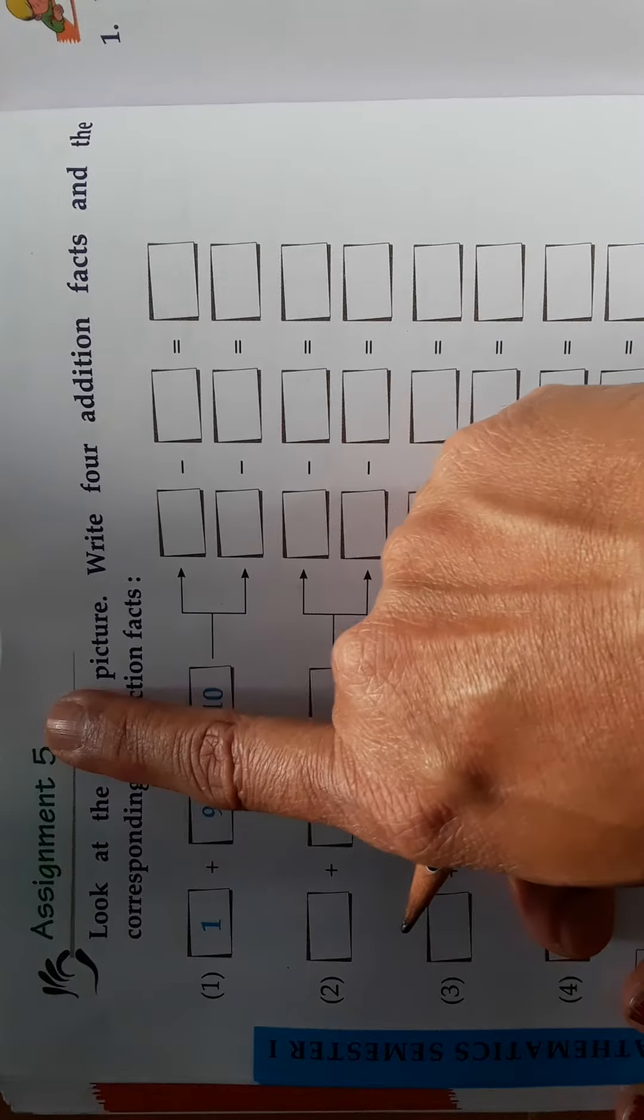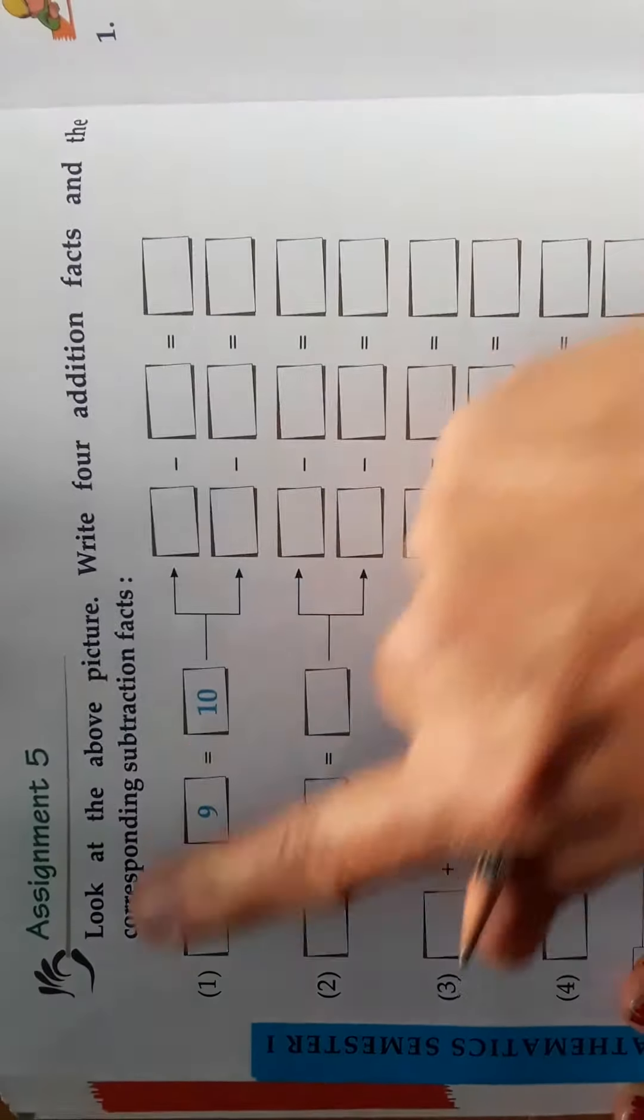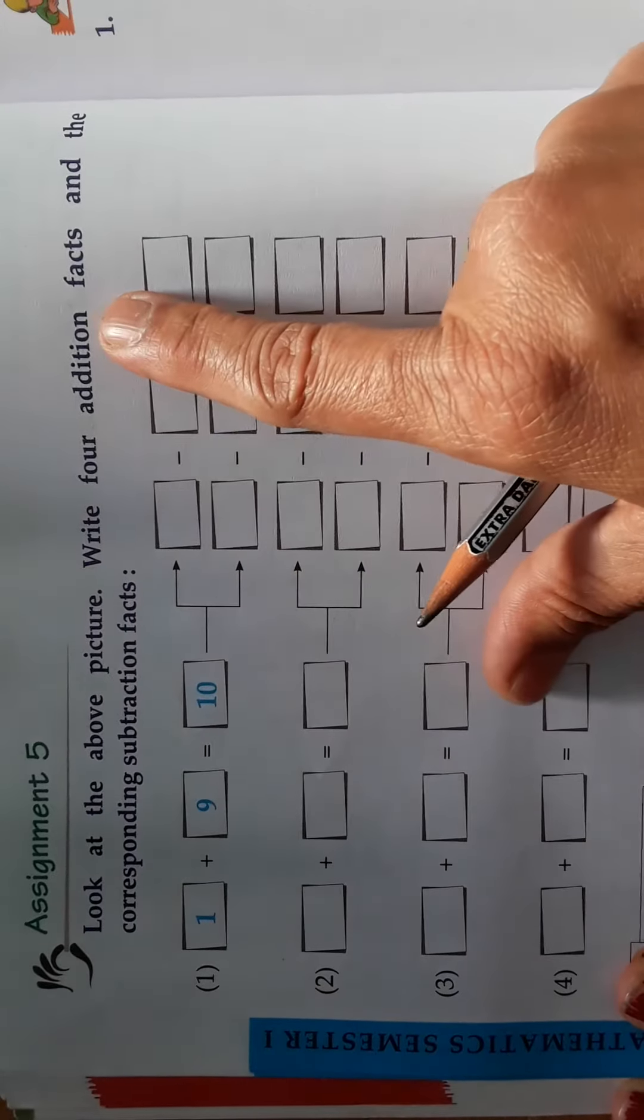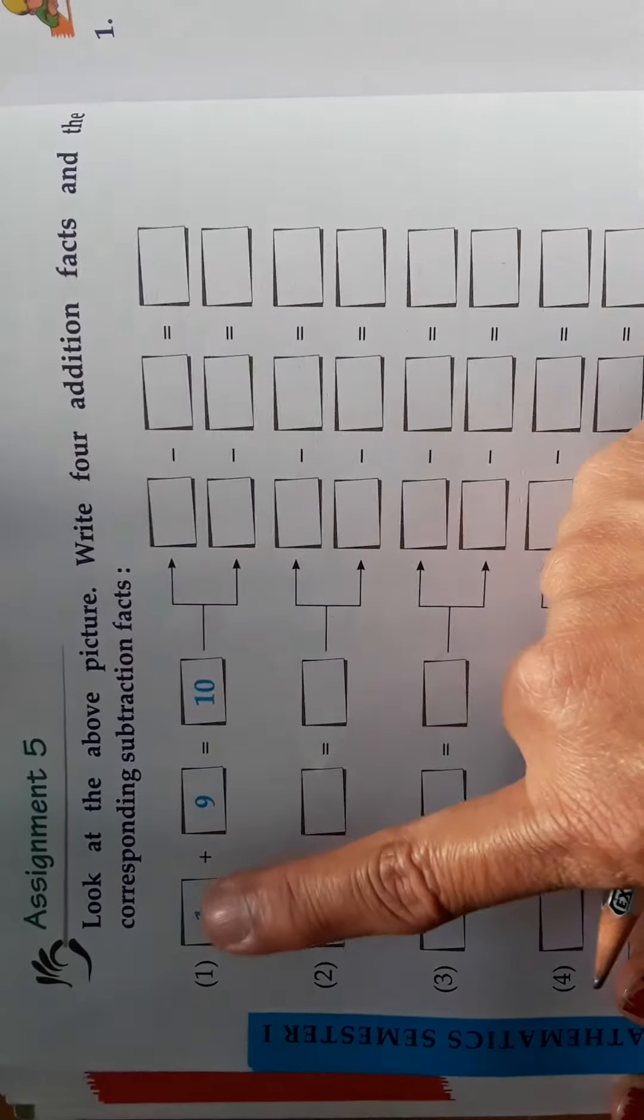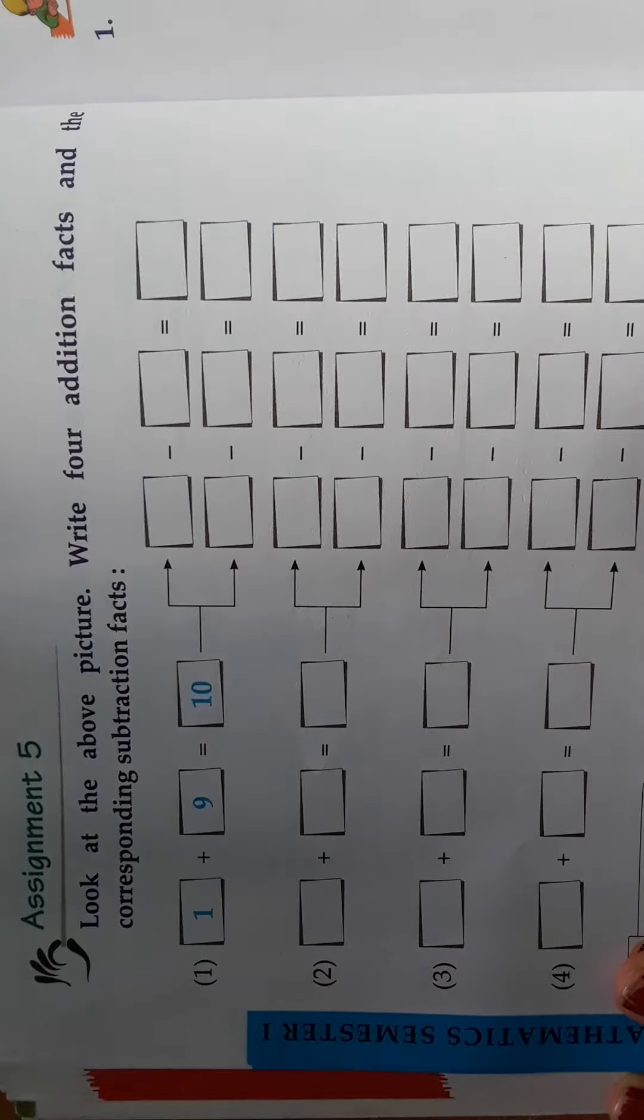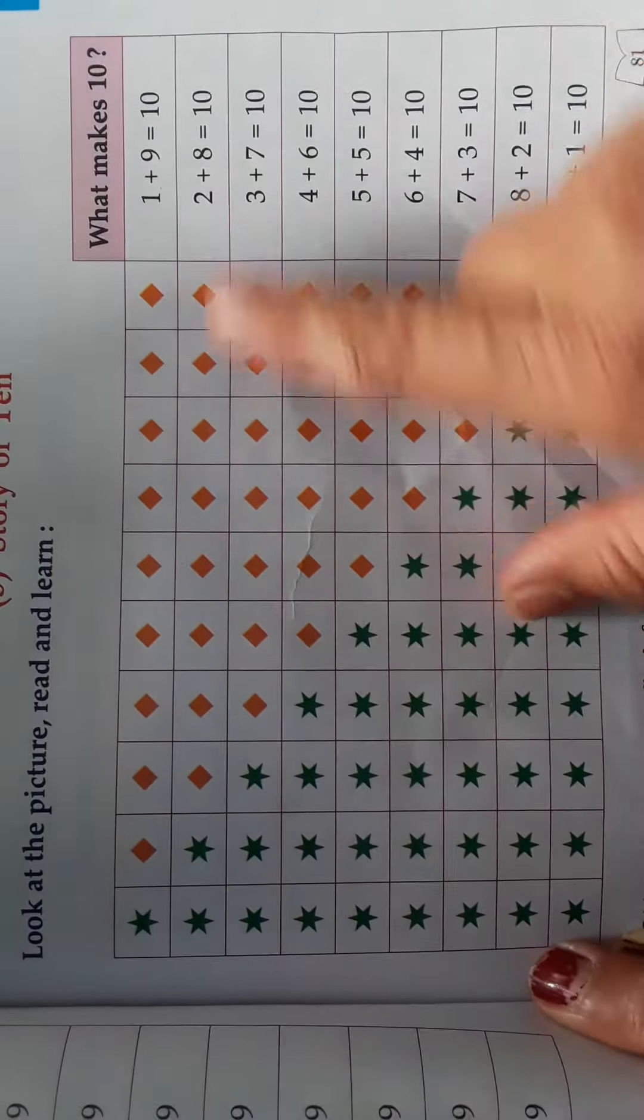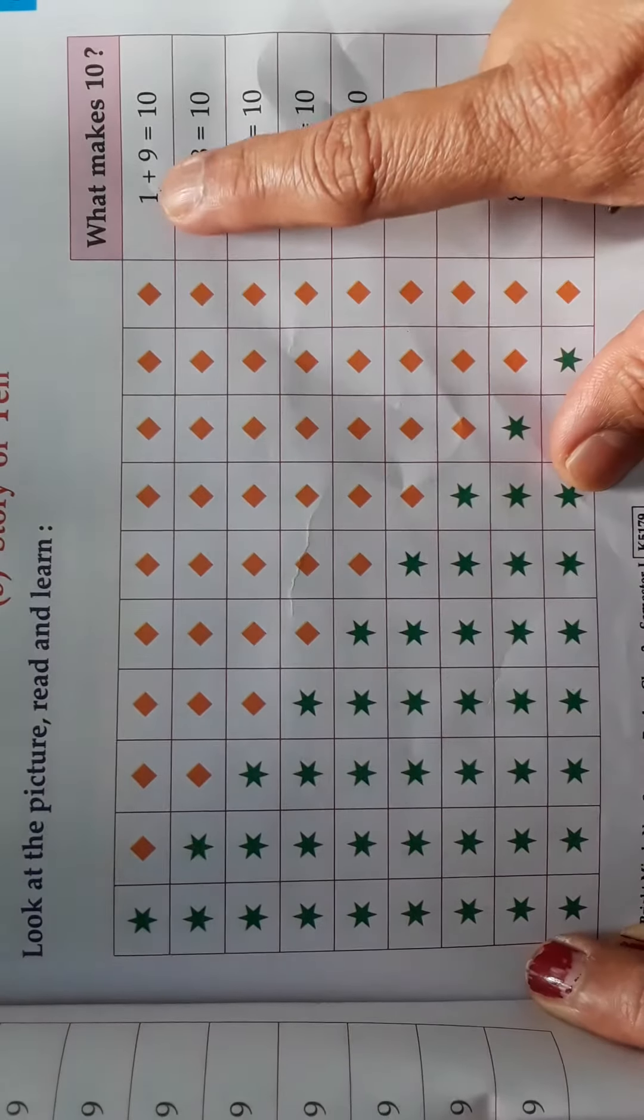Now we are going to see Assignment 5. What's the topic? Look at the above pictures and write four addition facts and the corresponding subtraction facts. Look here, this is the picture. Look at the picture. See, 1 plus 9